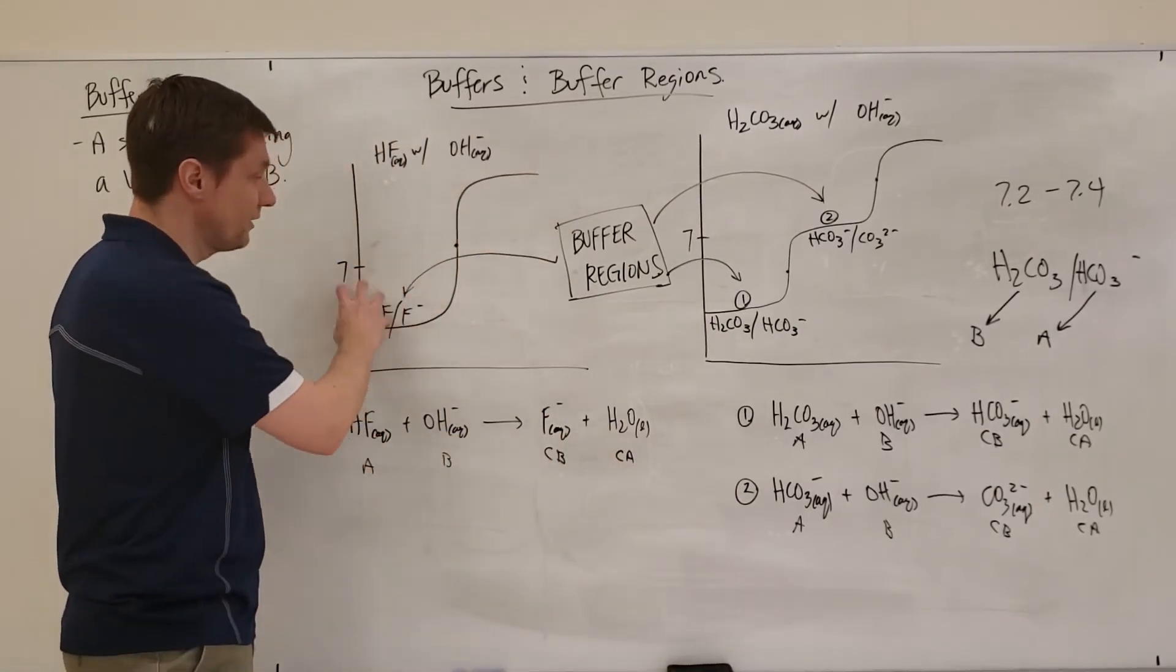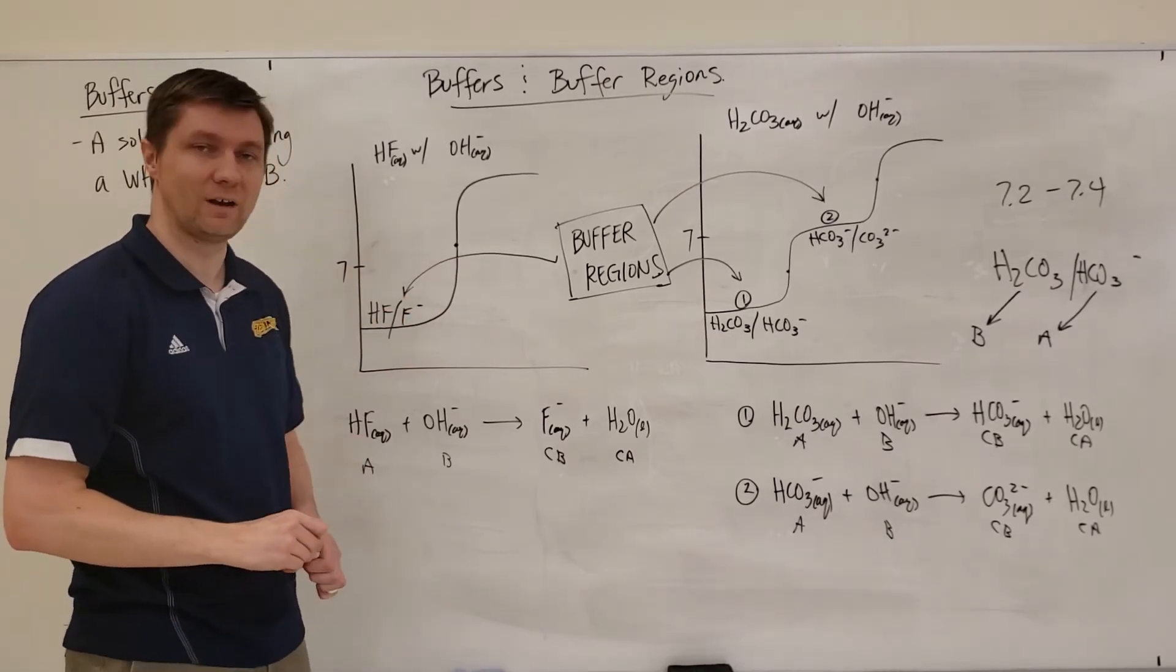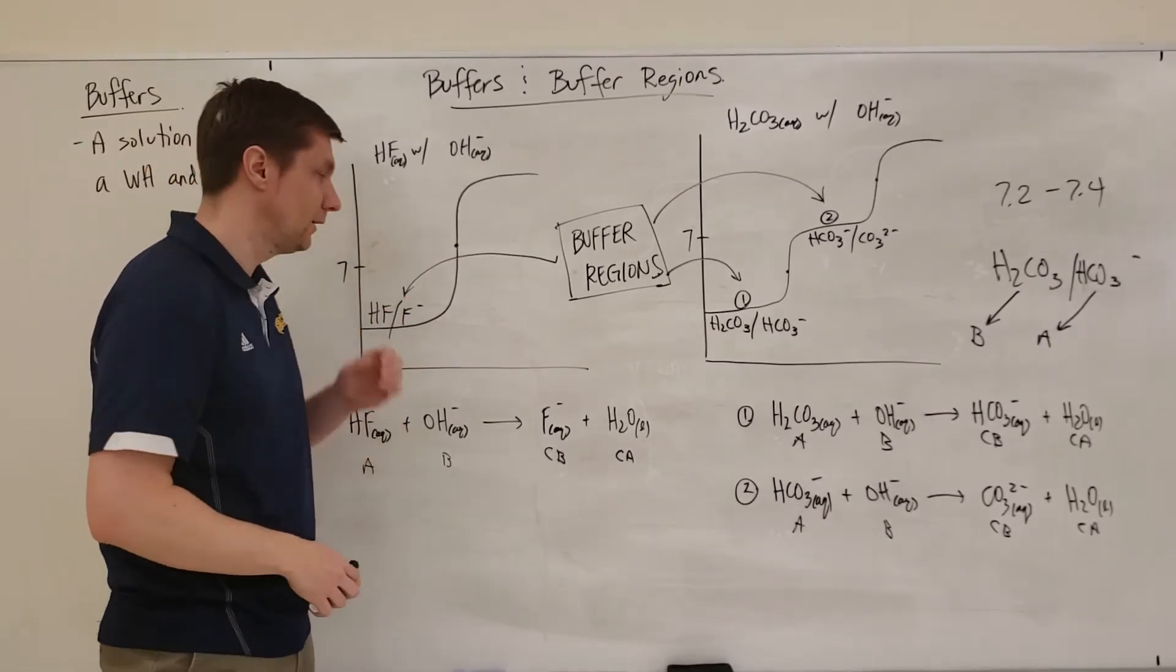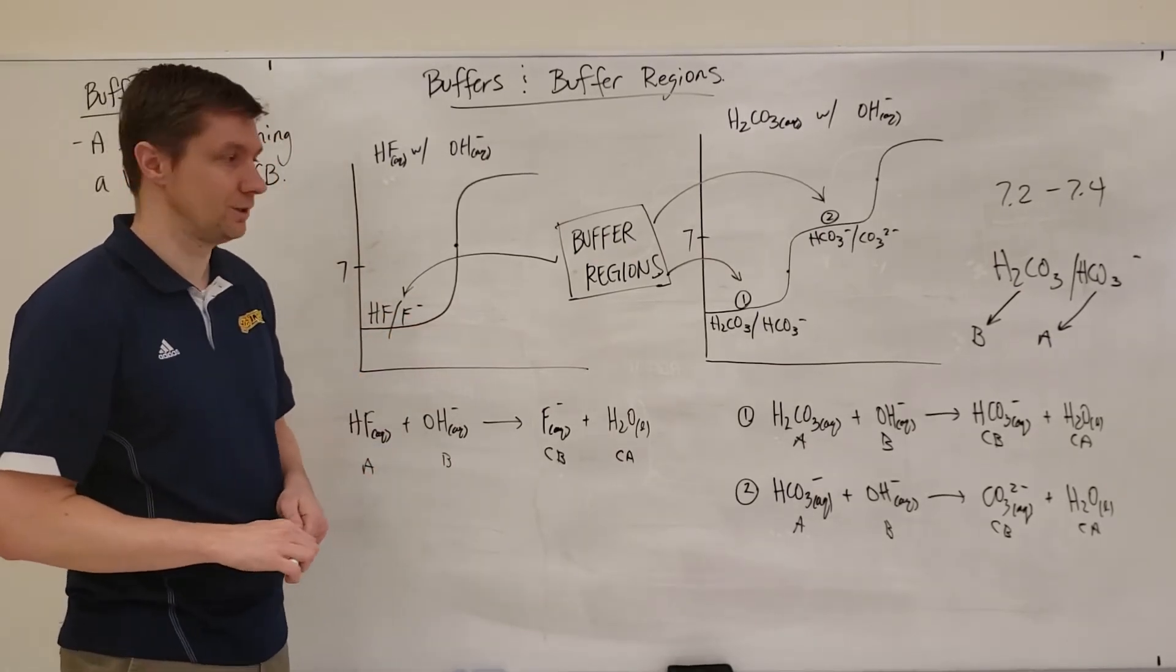So this area right here where the pH is relatively constant, that's what we identify as a buffer region. And this is a buffer, a weak acid with its conjugate base.